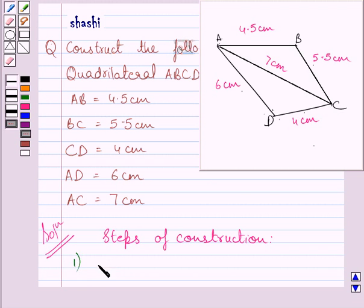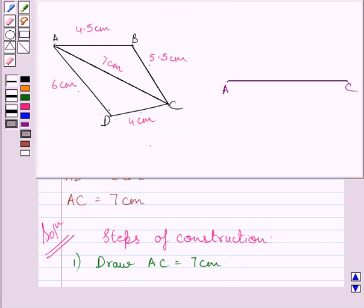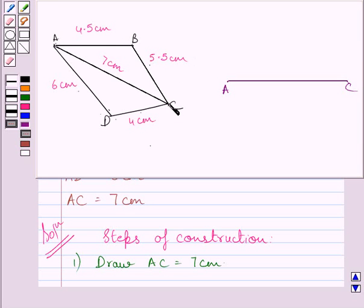The first step of construction is to draw AC equal to 7 cm. To construct quadrilateral ABCD, we need to locate two more points: point B and point D. First of all, we will locate point B. To locate this point, we will draw an arc of radius 4.5 cm from center A and another arc of radius 5.5 cm from center C. The point of intersection of these two arcs will represent point B.